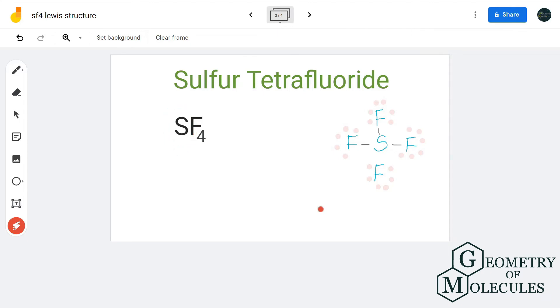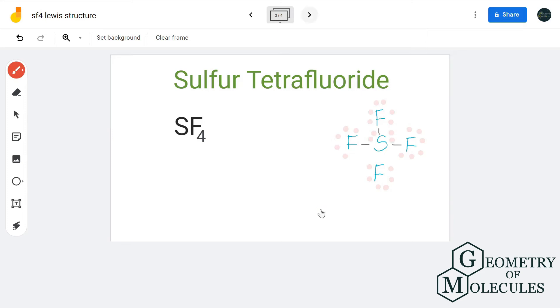To check if this structure is stable, let's calculate the formal charges on each atom in this molecule. So sulfur has six valence electrons, out of which two are non-bonding electrons and eight are bonding electrons.